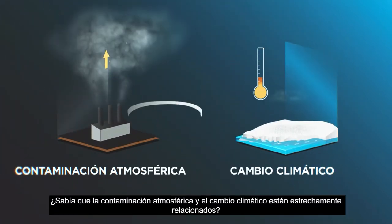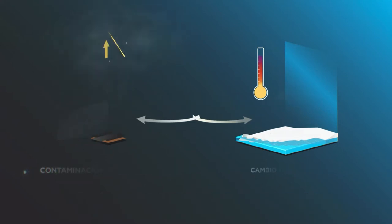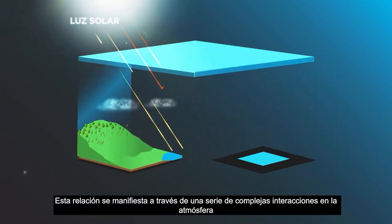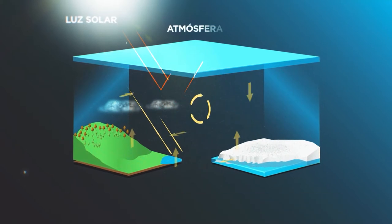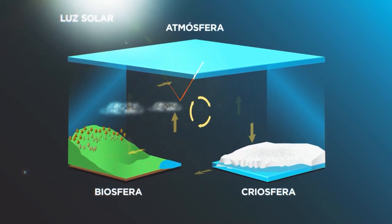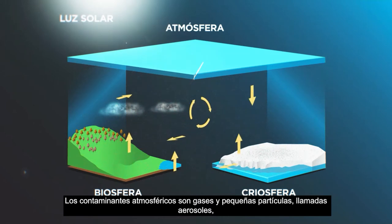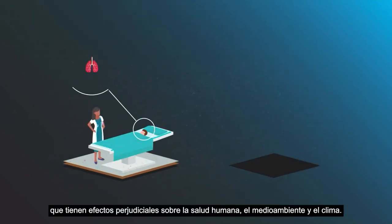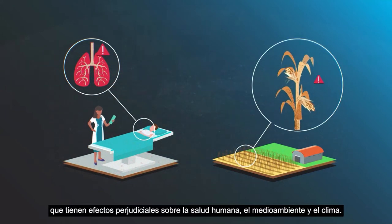Did you know that air pollution and climate change are closely interlinked? This link reveals itself through a series of complex interactions within the atmosphere and between the atmosphere, the biosphere and the cryosphere. Air pollutants are gases and small particles called aerosols that have detrimental impacts on human health, the environment and the climate.